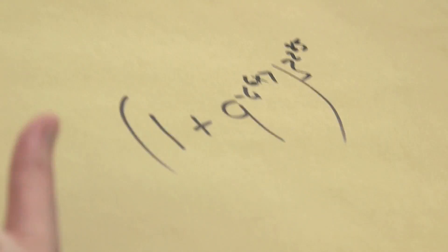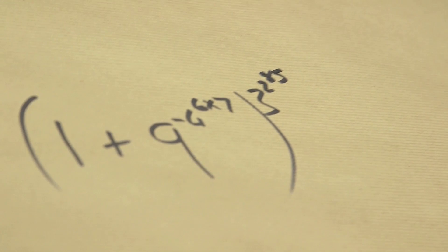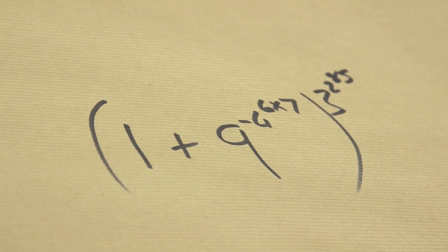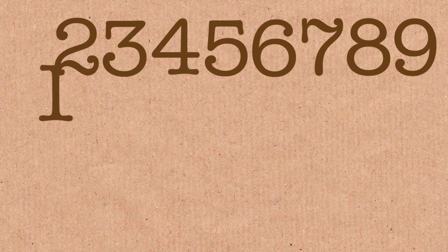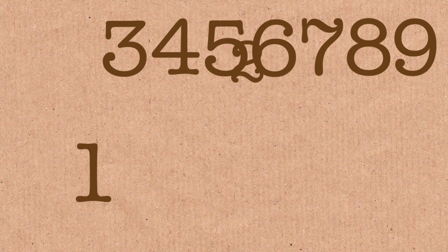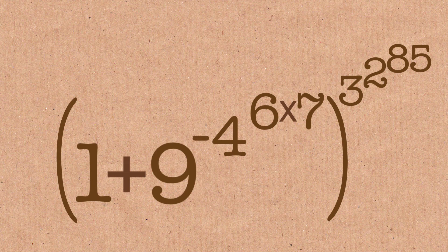So this is the formula. Now let's just check it's a pandigital formula — let's check all the digits are there. We've got one, two, three, four, five, six, seven, eight, nine. Yes, I've used all the digits one to nine.